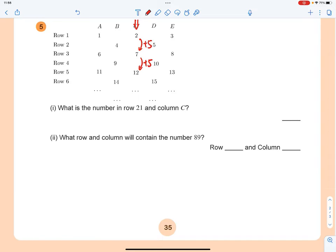But actually, in row 21, we have no idea how many numbers are there in column C. We have to treat two rows as a cycle, because every two rows, you're going to have one number in column C.